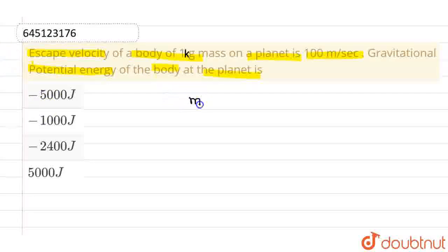We are given the mass of the object, which is 1 kg. Further, we are given the escape velocity, denoted by VE, which is 100 m per second.